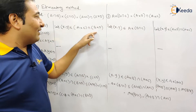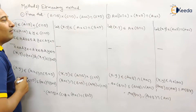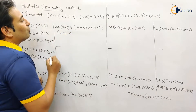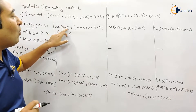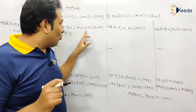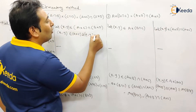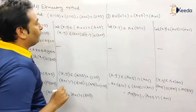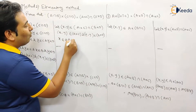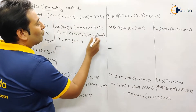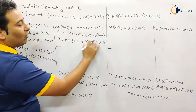x comma y belongs to A×C ∩ B×D means x comma y belongs to both A×C and B×D. So x comma y belongs to A×C means x belongs to A and y belongs to C, and x comma y belongs to B×D means x belongs to B and y belongs to D. We have separated all the terms.